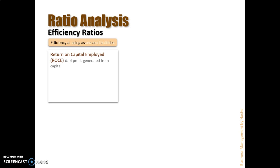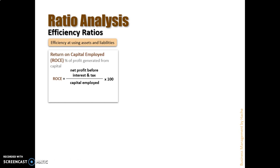Number one, for both standard and higher level, is the Return on Capital Employed, or ROCE. This value is a percentage to understand what percentage of the profit generated by a business comes from the capital that has been invested — that has been employed. In order to know that, we use values from two documents: we get the net profit before interest and tax from the profit and loss account, and we get the capital employed from the balance sheet. In the balance sheet, there's no capital employed as a separate value, but you get it from three specific figures in that document.